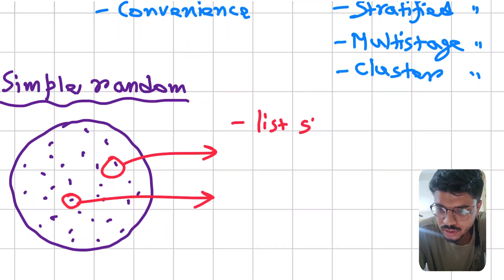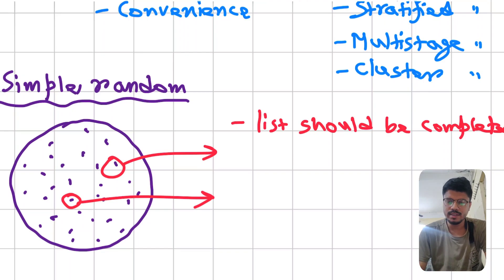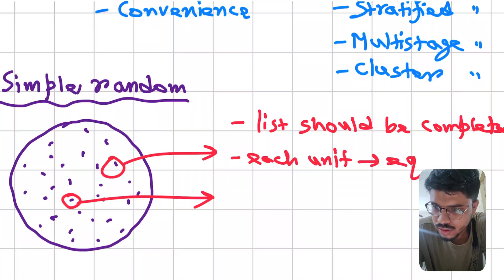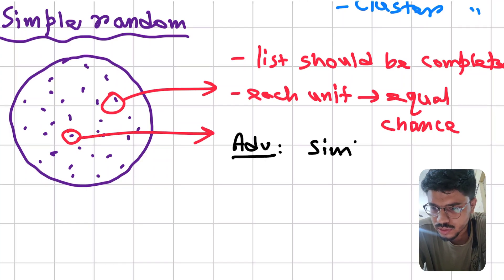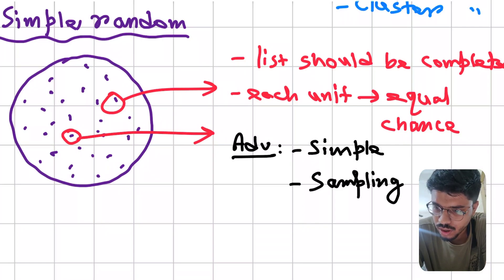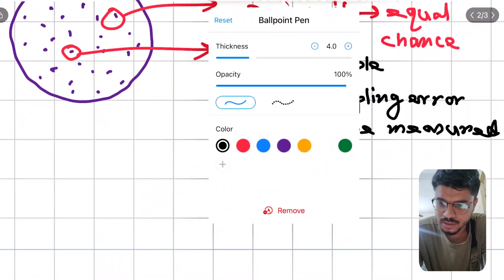The prerequisite of simple random sampling is that the list should be complete, because any unit can be selected, so you have to provide a complete list. Each unit has an equal chance of being selected. The advantages are that this is the simplest method and the sampling error can be easily measured.